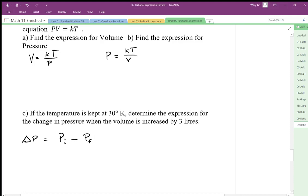My initial pressure is P equals kT over V. We're going to change the temperature to 30 because we know that value. k is a constant, but we don't know its value.